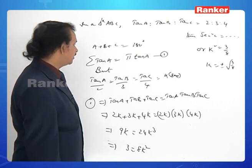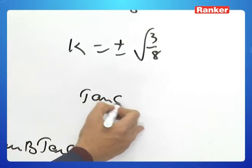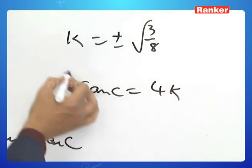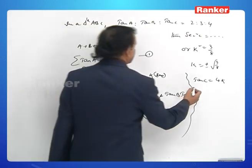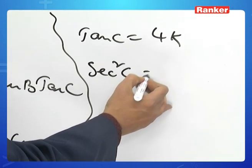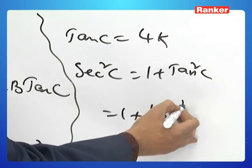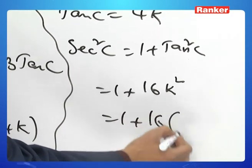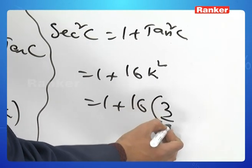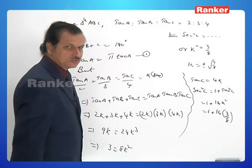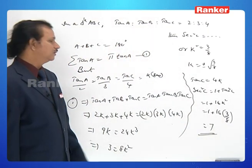Thus k = ±√(3/8). Since tan C = 4k, sec² C = 1 + tan² C = 1 + 16k² = 1 + 16 × (3/8) = 1 + 6 = 7. The answer for sec² C is 7.